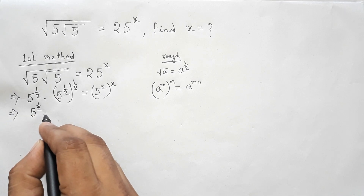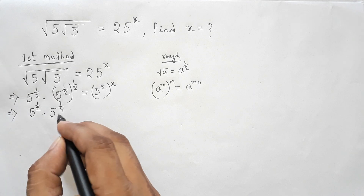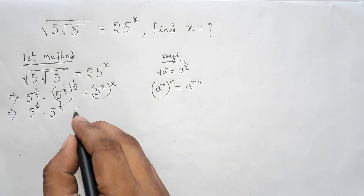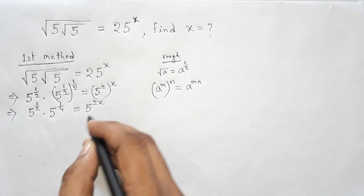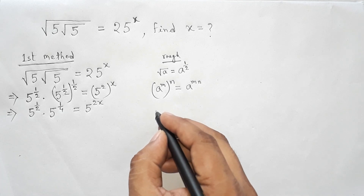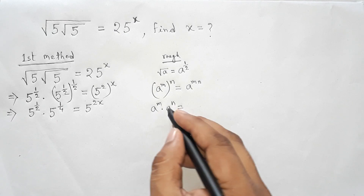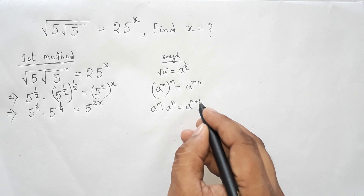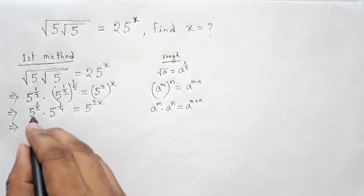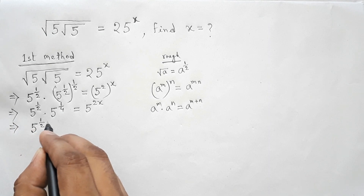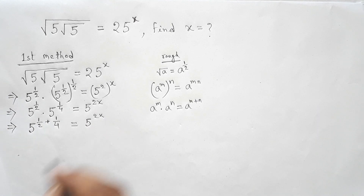Now using the indices formula: a to the power m, to the power n equals a to the power m times n. Applying this, the nested root gives 5 to the power 1 by 4. Then using the formula a to the power m times a to the power n equals a to the power m plus n, since both bases are 5, we get 5 to the power 1 by 2 plus 1 by 4 equal to 5 to the power 2x.